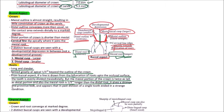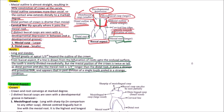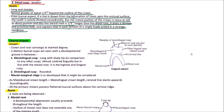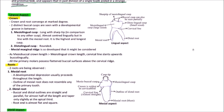This gives a strange and primitive look, as if in the past the division of a single tooth ended in a strange condition. Now the lingual aspect: the crown and root converge to a marked degree. Two distinct lingual cusps are seen with a developmental groove in between — the mesiolingual cusp and the distolingual cusp.